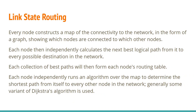Dijkstra's algorithm — also called Dijkstra's SPF, or Shortest Path First algorithm — allows calculation of the best path from any node to the destination, and gets that path added to the routing table. That's the way it works.